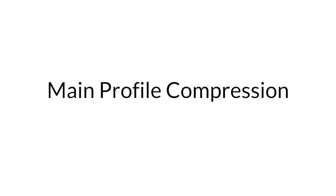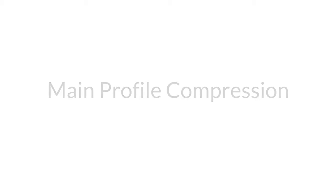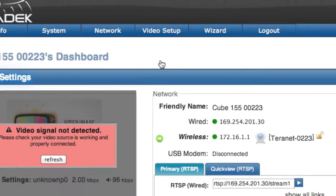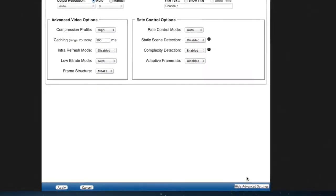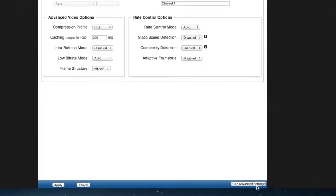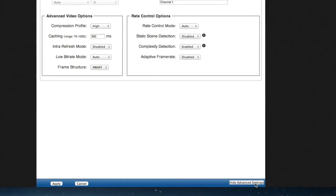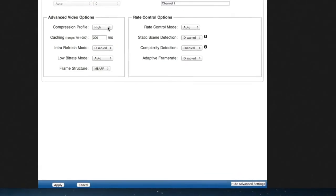Also, use main profile compression when streaming to a CDN. You can find this under Video Settings, Encoder Settings, Advanced Settings, Compression Profile.